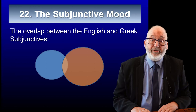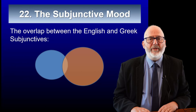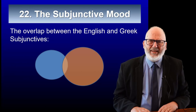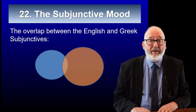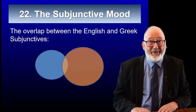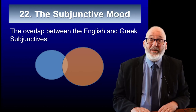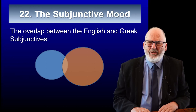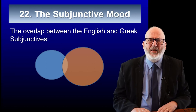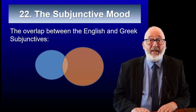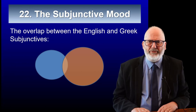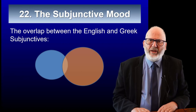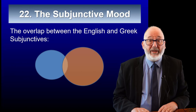It's normal that I would approach a new topic by comparing the English grammar with the Greek grammar, but with subjunctives, it's probably best just to concentrate on the Greek subjunctive without thinking too much of the English subjunctive. While English uses the subjunctive quite a lot, Greek maybe uses it a little bit more. There is some overlap between the English and the Greek usage, but most of it doesn't overlap, and the bits that do overlap aren't particularly helpful. So we're just going to begin by looking at the Greek subjunctive.